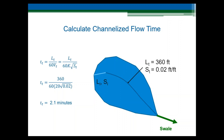Next, we calculate the channelized travel time based on the channelized flow length of 360 feet and a longitudinal slope of 2%, or 0.02 feet per feet. For the conveyance coefficient, we will assume paved areas such as a gutter for this urban site, giving a conveyance coefficient of 20 in accordance with Table 6-2 of the Urban Storm Drainage Criteria Manual. Applying the travel time formula with the unit conversion from seconds to minutes, we calculate a channelized flow time of approximately 2.1 minutes — reasonable for a short, paved reach.